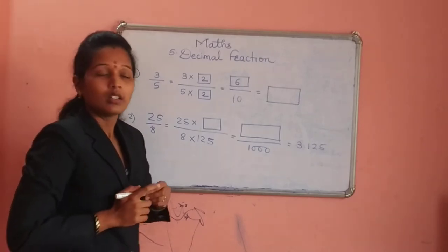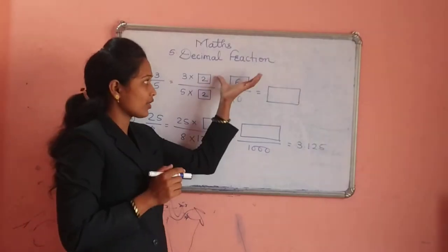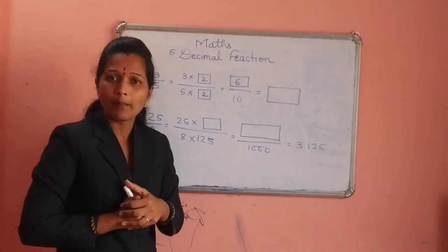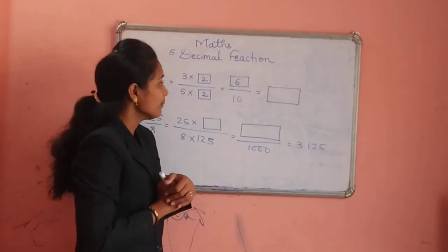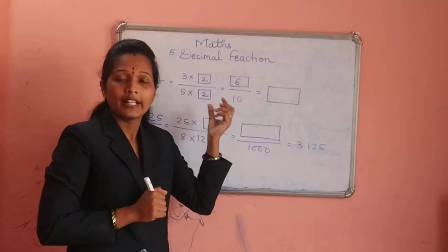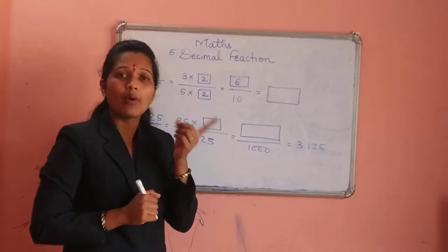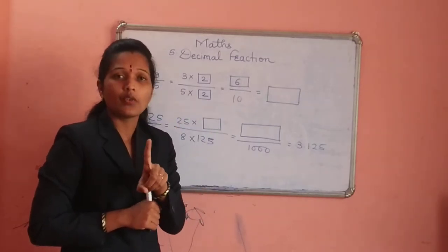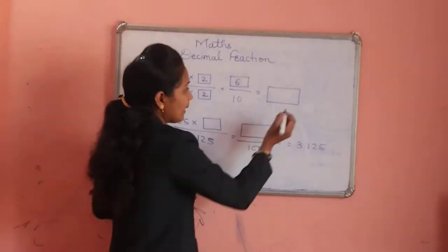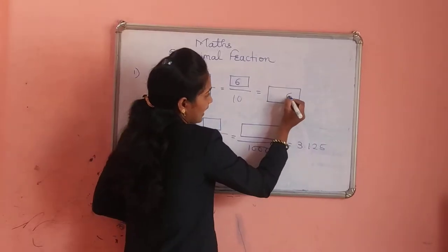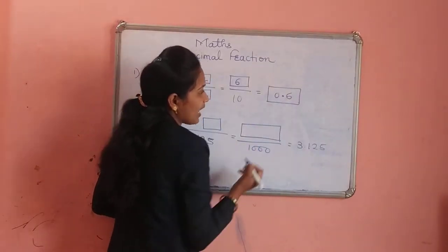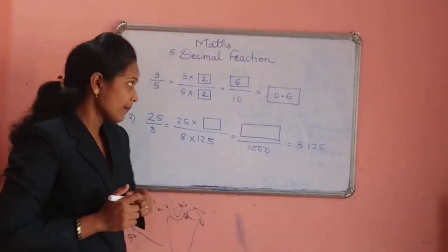In the next fraction, 6 divided by 10, we have to write the decimal form — decimal means we have to give a point. The denominator is 10; in front of 1 there is one zero, so we remove 1 place and give the decimal point. Our answer is 0.6.